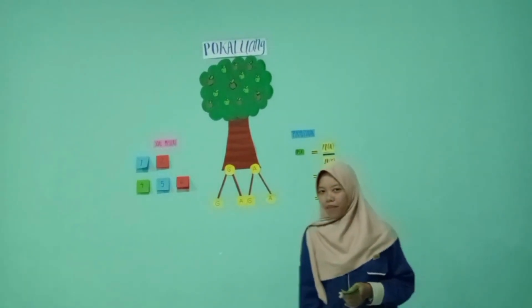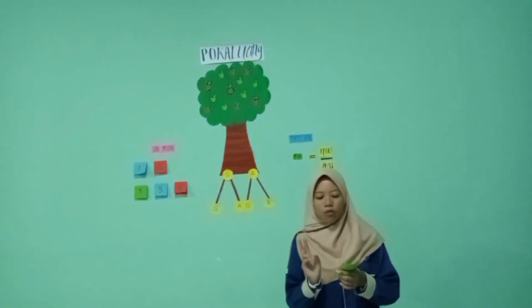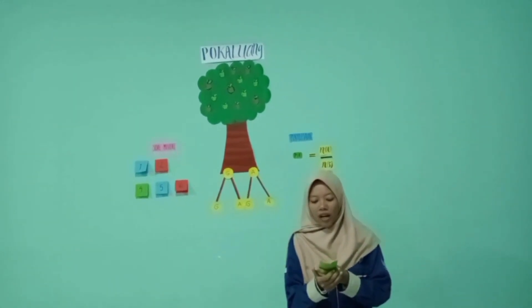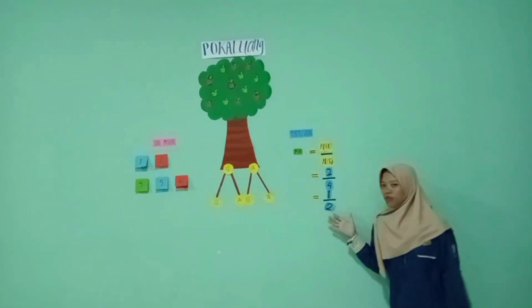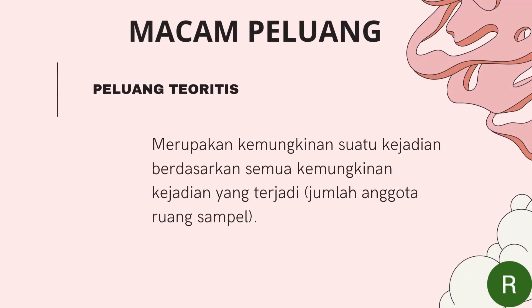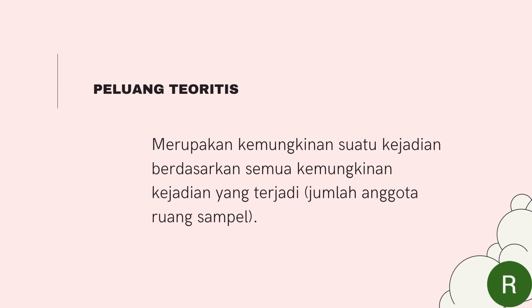Kesimpulannya, dari dua keping uang logam yang dilempar bersama-sama dalam satu kali, mendapatkan peluang satu angka dan satu gambar, peluangnya adalah satu per dua. Yang kedua ada peluang teoritis. Peluang teoritis merupakan kemungkinan suatu kejadian berdasarkan semua kemungkinan kejadian yang terjadi, yaitu jumlah anggota ruang sampel.